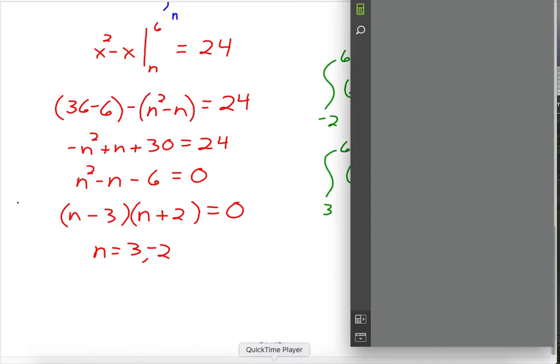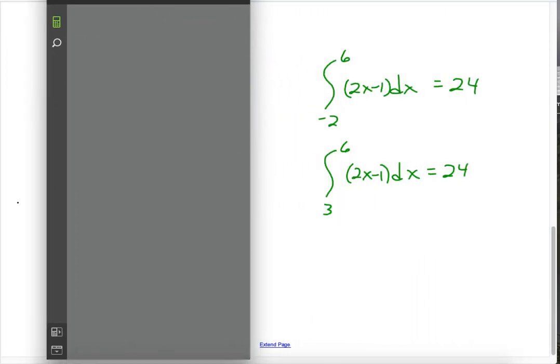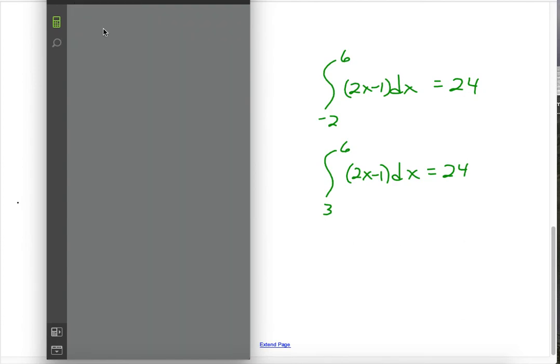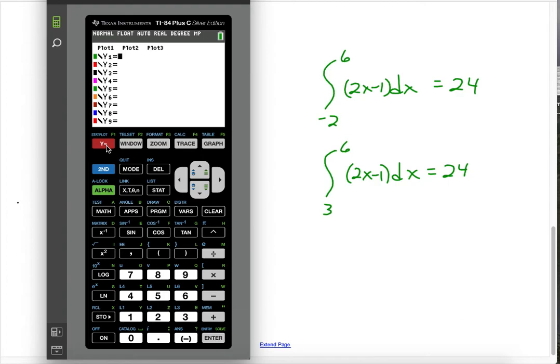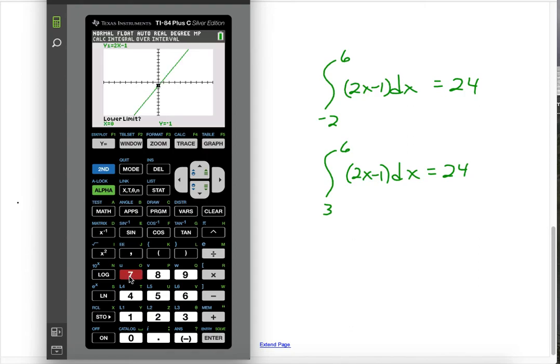All right, so now let's go ahead and take a look and see what that gives us. All right, so we're going to put in 2x minus 1 and zoom 6. Looks nice. All right, so now I'm going to do second, trace. We're going to do number 7, the integral. Lower limit, negative 2, enter. Upper limit, 6, enter. And as you can see, there's some negative amount, which takes away the positive amount that's above the x-axis, and we get 24.